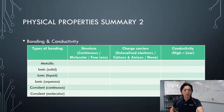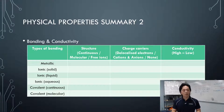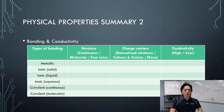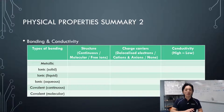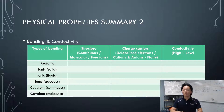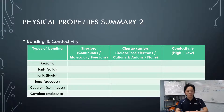For metallic bonding: structure is continuous. The charge carrier is free electrons or delocalized electrons — they are the same thing. Conductivity is high — metals are highly conductive.